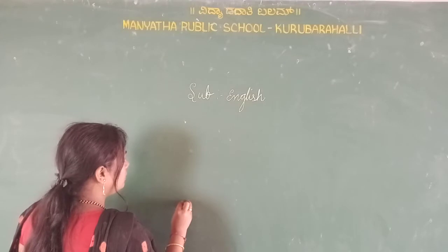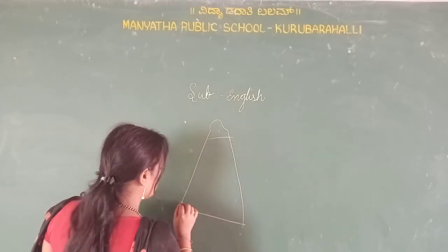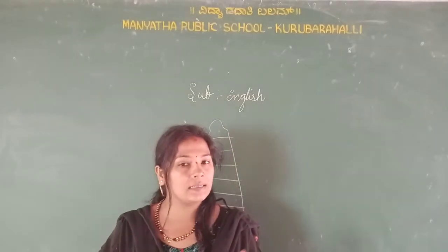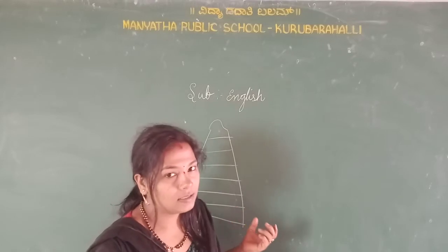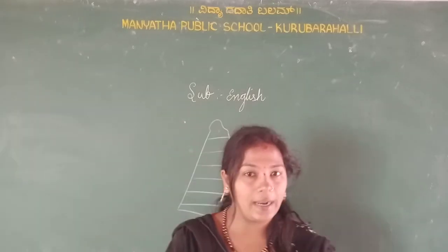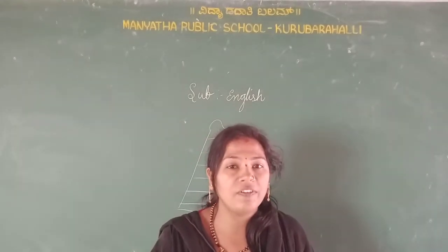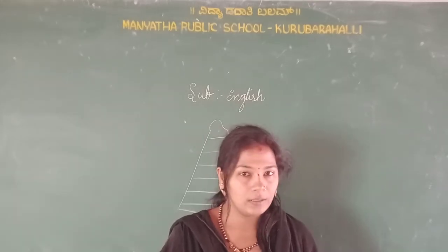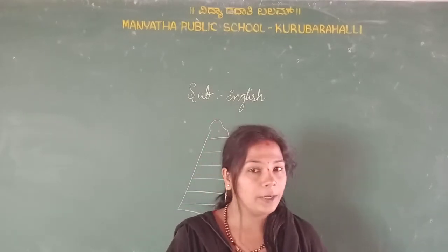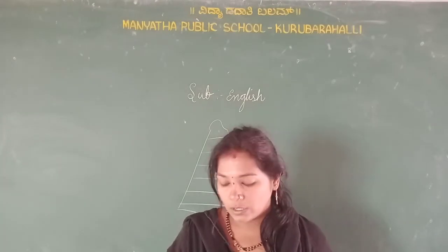Whenever we visit a beach, we see a tower like this — it looks very attractive. This is a lighthouse. One of the important lighthouses we can find in our Karnataka is at Kapu beach in Mangalore district. You can see a very attractive lighthouse at that beach. So today we are going to study the first lesson, the first prose of your book, that is 'The Lighthouse.'